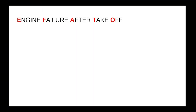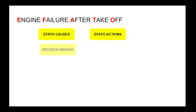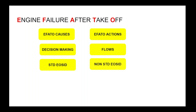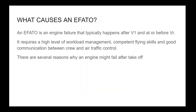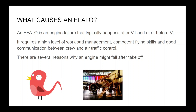Welcome to the theory part on the AFATO procedure on the Airbus A320. The lesson will cover: AFATO causes, AFATO actions, decision making, flows for the procedure, standard and non-standard engine out SIDs, engine fires, the beta target, mistakes people make, and thrust lever management. An AFATO is an engine failure that typically happens after V1 and at or before VR. Causes include bird strikes, engine malfunction, or foreign object debris.